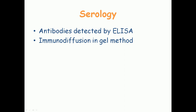Serology involves detecting antibodies against anthrax in the blood of the patient. Antibodies can be detected by a test known as ELISA (enzyme-linked immunosorbent assay). There is also another method known as immunodiffusion in gel, which can also be used to detect antibodies against the anthrax bacteria in patients.